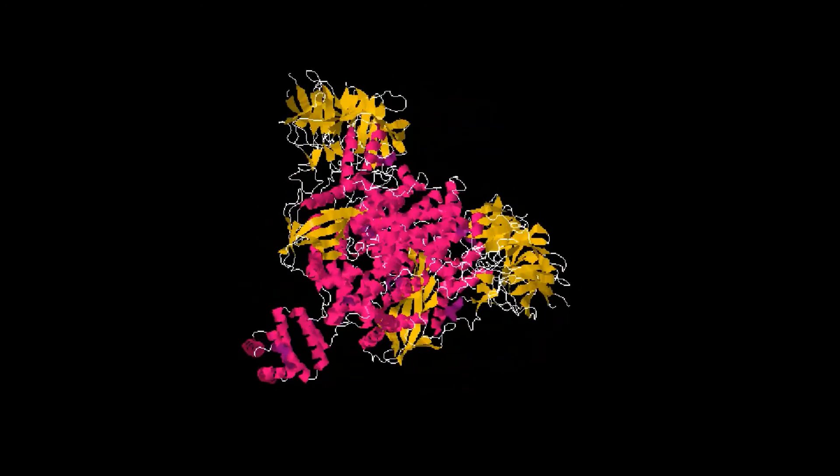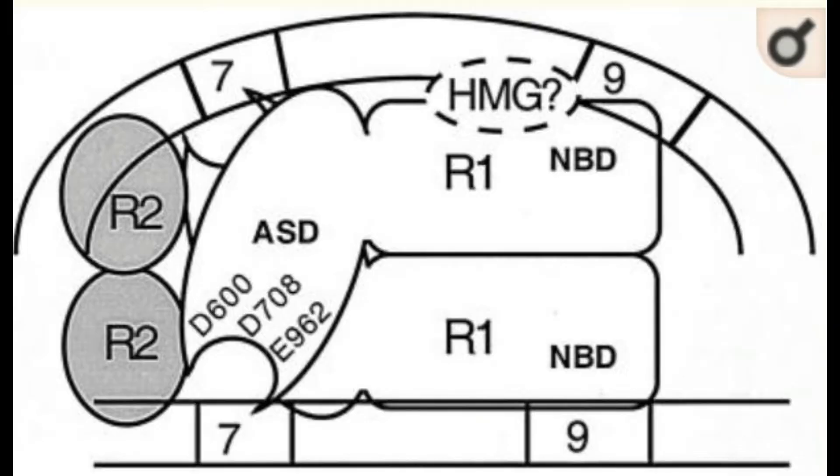The RAG1 core also contains three acidic residues, D600, D700A, and E962, that form what is called the DDE motif. This is the major active site for DNA cleavage.